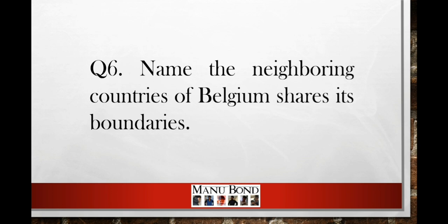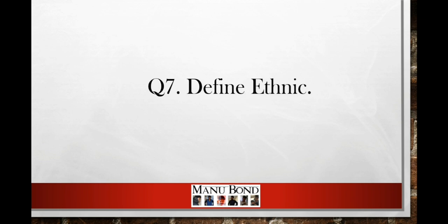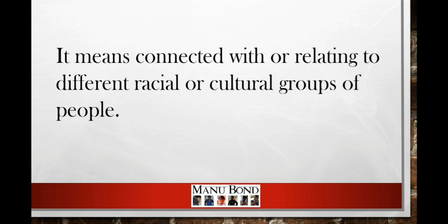Question number six: name the neighboring countries whose boundaries Belgium shares. Answer: France, Netherlands, Germany, and Luxembourg. Question number seven: define ethnic. Answer: it means connected with or relating to different racial or cultural groups of people.